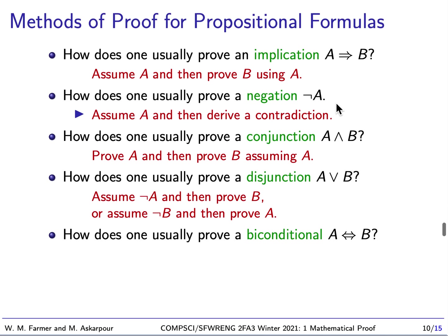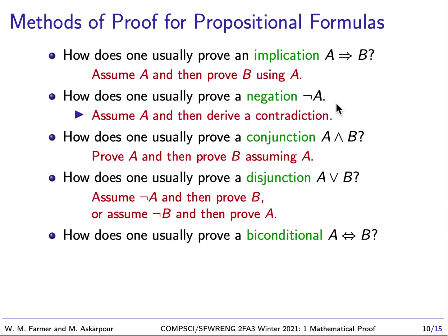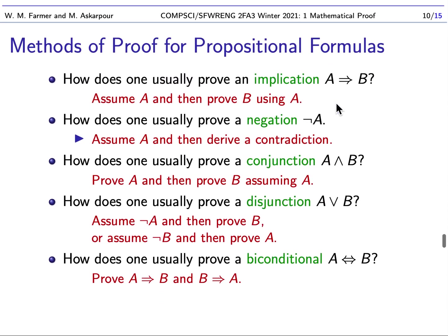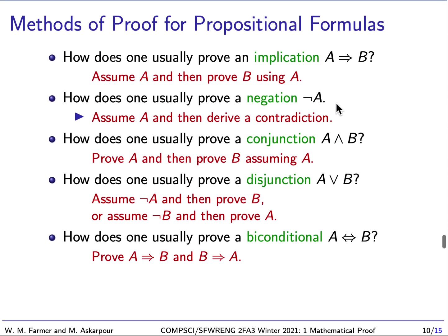What do we do with an if and only if statement, or what's called a bi-implication or a bi-conditional? This is A if and only if B. How do we prove this? Well, we actually have to prove two things. We prove that A implies B, and B implies A.